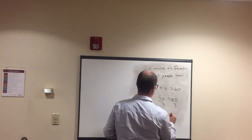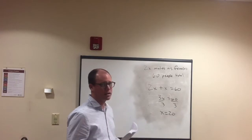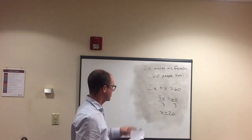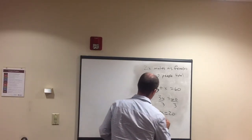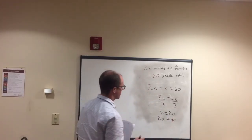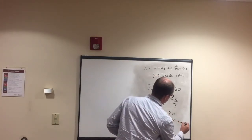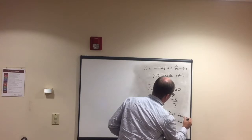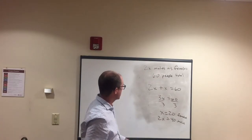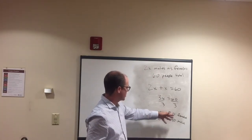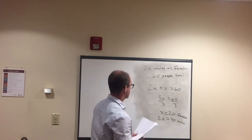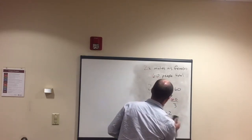Divide both sides by 3 and x equals 20. We set up females as x, so females equal 20. Males are 2x, which is 2 times 20 equals 40. Check: 20 plus 40 is 60 — that's our total. And 40 is twice as much as 20, so that also checks out. We have the right answer.